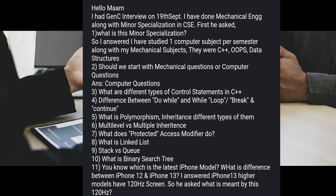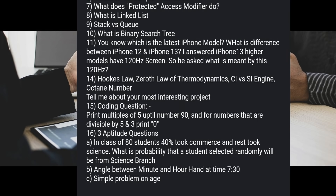The interviewer asked computer questions: different types of control systems in C++, differentiate do-while and while loop, break and continue, polymorphism, inheritance and its types, multi-level versus multiple inheritance, what does the protected access modifier do, linked list, stack versus queue, binary search tree, the latest iPhone model, and the difference between iPhone 12 and iPhone 13 — including what 120 Hz means. Then Hook's Law, zeroth law of thermodynamics, CI vs SI engine, and octane number.